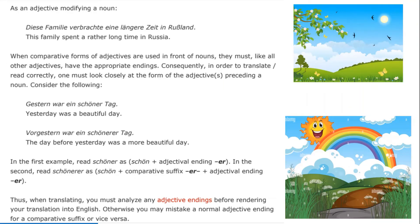The textbook tells us that when comparative forms of adjectives are used in front of nouns, they must, like all other adjectives, have the appropriate endings. You must look closely at the form of the adjective preceding the noun. For example, "gestern war ein schöner Tag" but "vorgestern war ein schönerer Tag" — in the first example, read "schöner" as "schön" plus the adjectival ending "-er"; in the second, read "schönerer" as "schön" plus the comparative suffix "-er" plus the adjectival ending "-er," which might otherwise be confused.